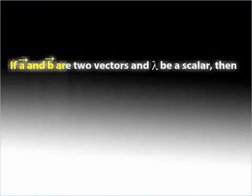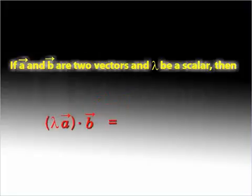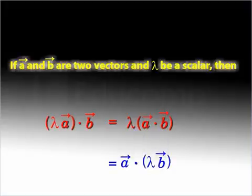If A and B are two vectors and lambda is any scalar, then the dot product of lambda times vector A and vector B is equal to lambda into the dot product of vectors A and B, which is further equal to the dot product of vector A and lambda times vector B.